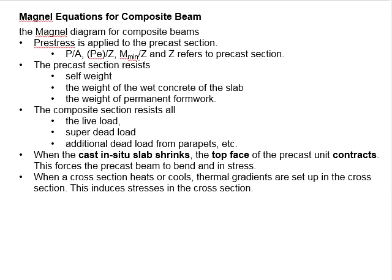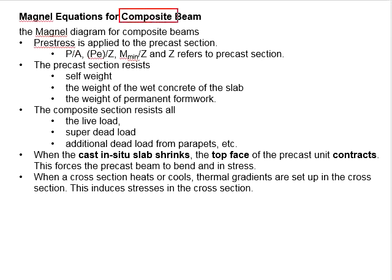Other than that, you will need to consider the shrinkage response of the cast-in-situ slab. Shrinkage is associated with the loss of free water within the mixed and hardened concrete. The cast-in-situ slab during the hydration process will undergo a certain degree of shrinkage. This shrinkage of the slab will lead to a shrinkage force and cause the top face of the pre-cast element to contract. This contraction force will cause the pre-stressed member to bend in stress. The effect of the shrinkage force on the pre-cast beam cannot be prevented because the composite member must ensure good connection and resistance of slip between the joints of the pre-cast unit and the in-situ slab.